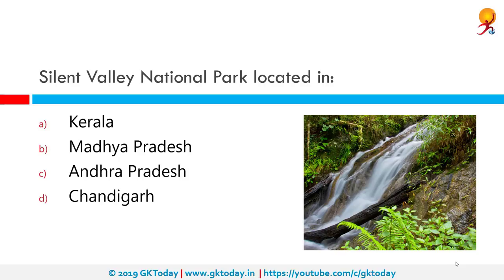Silent Valley National Park is located where? It is located in Kerala. Silent Valley National Park is a national park in Kerala. The British named the area Silent Valley because of the perceived absence of noisy cicadas.